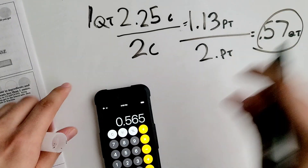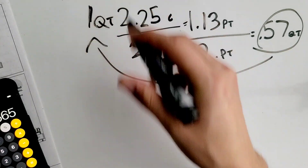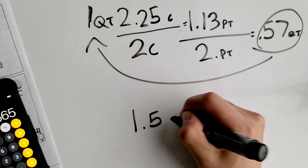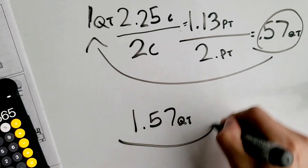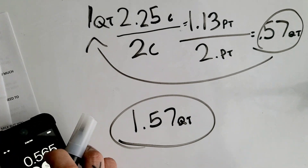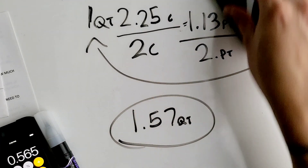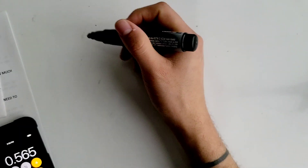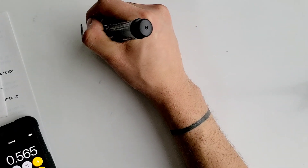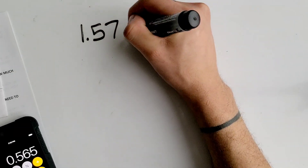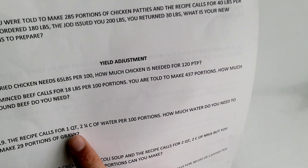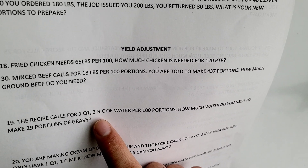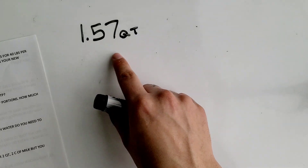Now that we have everything in the same unit, we just add them together. One quart plus 0.57 quarts gives us 1.57 quarts. So one quart and two and one-fourth cups is the same thing as 1.57 quarts.